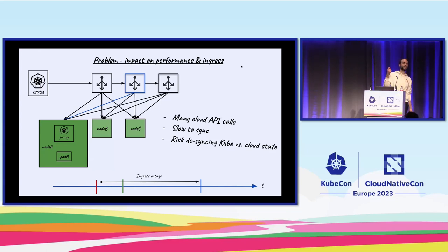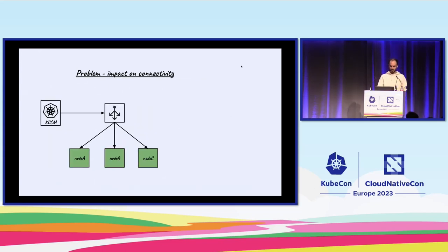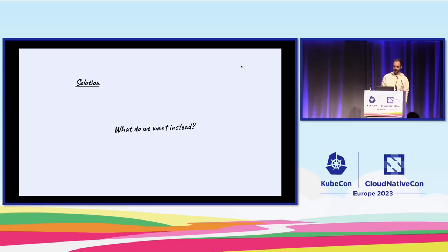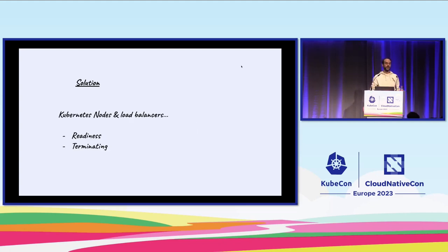We've caused an ingress outage between the moment we removed the node and the moment we re-added it, even though the service proxy was running fine and so was the pod — to them it was totally unclear what happened. There's another important problem: whenever the node transitions to not-ready and we remove it, all connections get instantly terminated from the load balancer to the node, introducing network instability across your cluster.